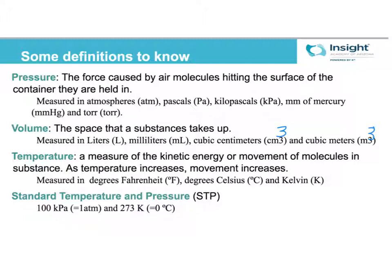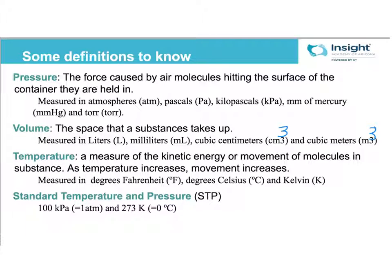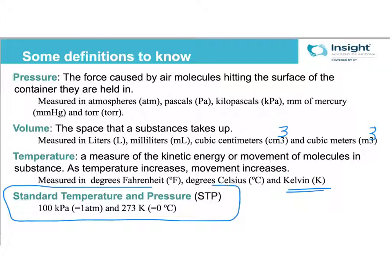A new unit related to temperature in this class is the Kelvin. It will be a little while until we get there, but that's another potential unit for temperature. Make sure you remember these standard temperature and pressure (STP) values: one atmosphere or 100 kPa for pressure, and 273 Kelvin for temperature. Those two pressure values are equal to each other, as are 273 Kelvin and zero degrees Celsius. If you still need to write these down, pause the video.